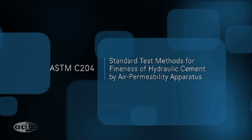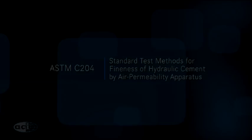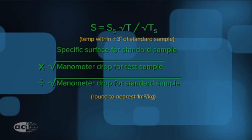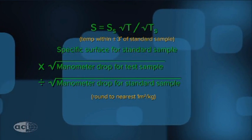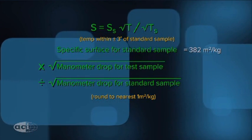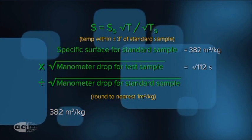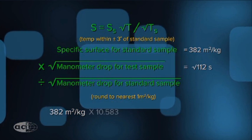ASTM C204, Blaine Fineness, Calculation. For our example, the specific surface of the calibration sample, 382 meters squared per kilogram, will be used, times the square root of the measured time interval of manometer drop for the calibration sample.